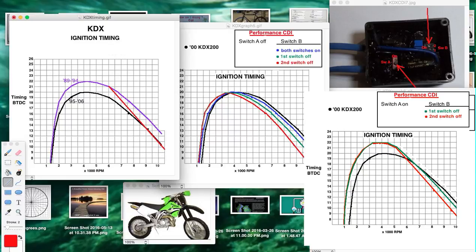This is my performance CDI with switch A on and switch B with the second switch off. It gives that more rapid change as the RPMs advance, which is something normally you can only do with a digital CDI.